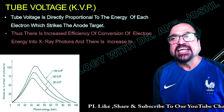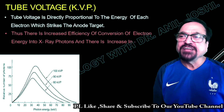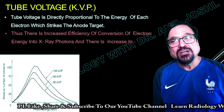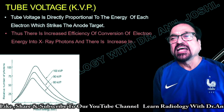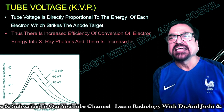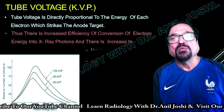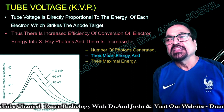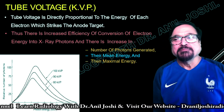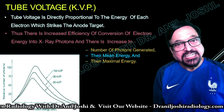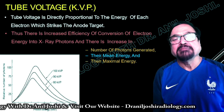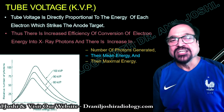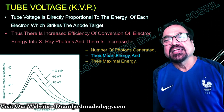There is increased efficiency of conversion of electron energy into X-ray photons when there is an increase in KV. This increase in KV is achieved through: the number of photons generated, their mean energy, and their maximum energy. These are the three measures by which we assess KVP.